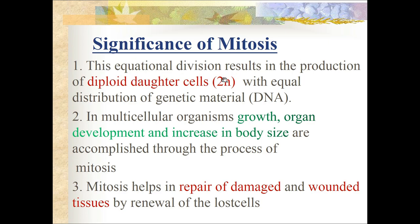Significance of mitosis: this equational division produces diploid daughter cells (2N) with equal distribution of genetic material. In multicellular organisms, growth, organ development, and increase in body size are accomplished through mitosis. Mitosis also helps in repair of damage - wounded tissues are renewed by mitosis and lost cells are replaced.